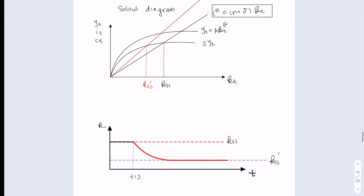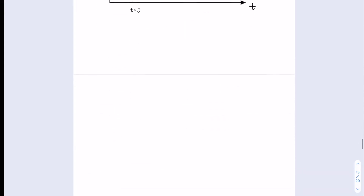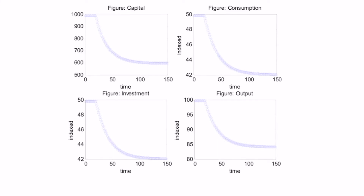How will that affect the transition path for all the other variables? Given that output is a function of k, the output time path has the same pattern as the time path for capital stock per capita. Given that consumption is a fixed portion of output, consumption also follows the same pattern. Finally, for investment, it is also a portion of output, so investment also has a transition time path with the same pattern as output.